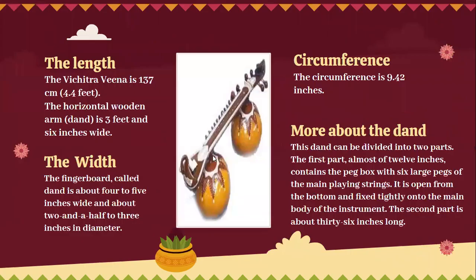Anatomy of the Vichitra Veena: The instrument is 137 centimeters, or 4.4 feet. The horizontal wooden arm, called the dond, is three feet and six inches wide. The fingerboard is about four to five inches wide and about two and a half to three inches in diameter. The circumference is 9.42 inches. The dond is divided into two parts: the first part of about 12 inches contains the peg box with six large pegs for the main playing strings, open from the bottom and fixed tightly onto the main body. The second part is about 36 inches long.